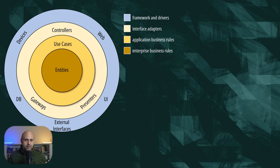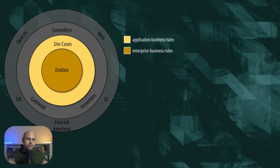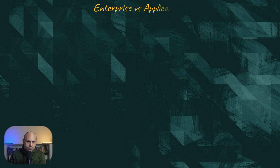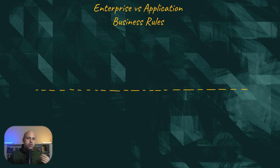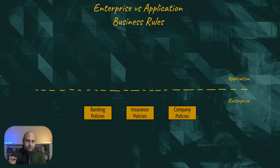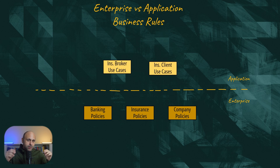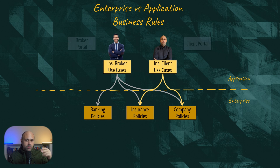Uncle Bob splits the business logic into two kinds: enterprise business rules and application business rules. The difference is not obvious if you don't know what an enterprise is. In the context of a very large organization, we might have a set of rules or policies that must be enforced in all products or applications — these are the enterprise-wide business rules.